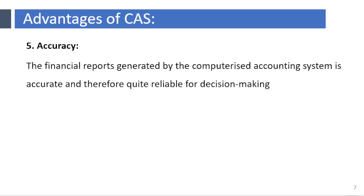The financial reports generated by the computerized accounting system are accurate and therefore quite reliable for decision making. In a manual accounting system, the reports and information are likely to be inaccurate and therefore cannot be trusted because it is being processed by many users.